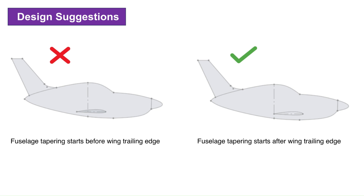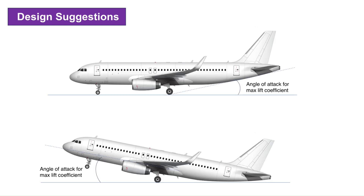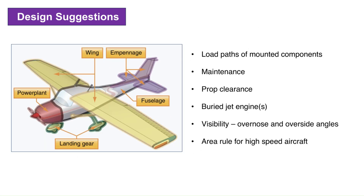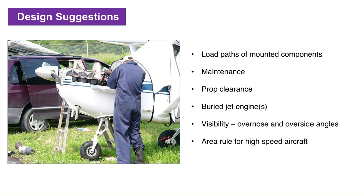Some design suggestions: the fuselage should be as streamlined as possible. Do not start the tapering of the fuselage until past the trailing edge of the wing — if the wing and fuselage both taper at the same time, the air will be more likely to separate, increasing drag. The tail upsweep angle is very important during takeoff and flare landing; the fuselage should allow the airplane to rotate to an angle close to that of the angle of attack of its maximum lift coefficient. Keep in mind the load paths of the mounted components such as wing, tails, and landing gear. Maintenance should be simple, allowing the replacement of avionics, batteries, control linkages, and so on.